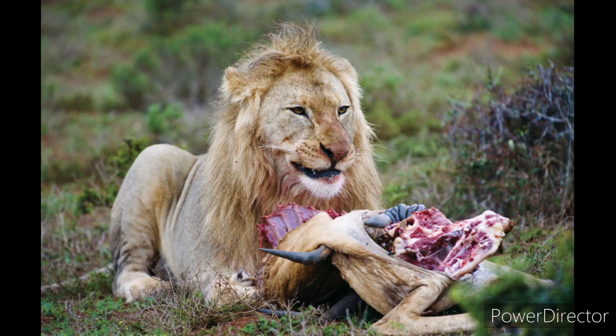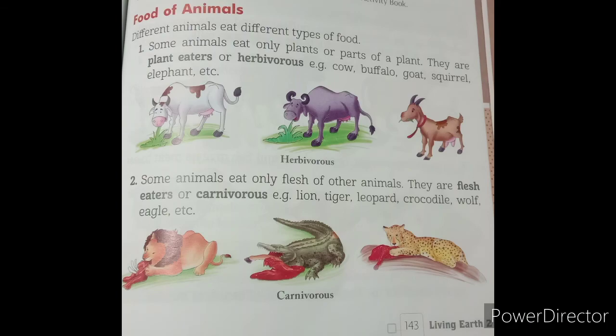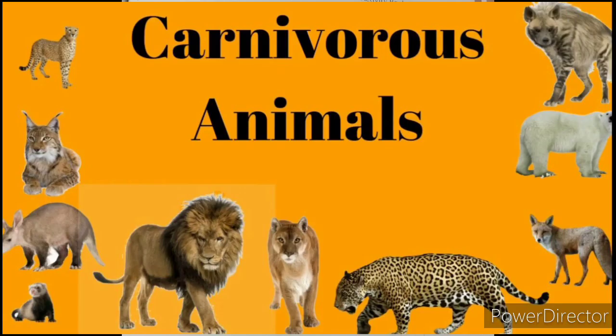Some animals eat only the flesh of other animals. They are flesh eaters or carnivores. Examples: lion, tiger, leopard, crocodile, wolf, eagle.